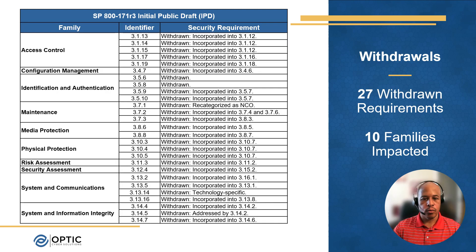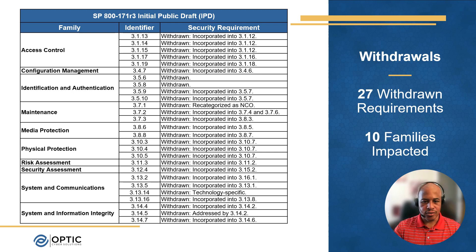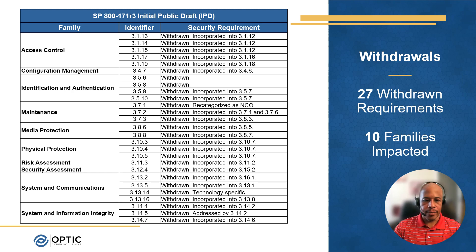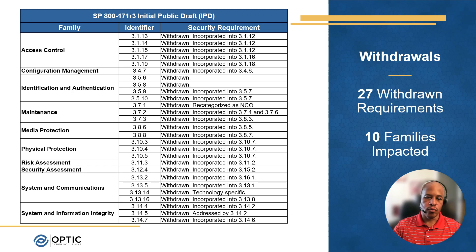On this slide we have the withdrawals — there are 27 total withdrawals across 10 control families. Most of these requirements that have been withdrawn have actually been incorporated into related controls. For identification and authentication, requirements 3.5.6 and 3.5.8 have been withdrawn. For maintenance, requirement 3.7.1 has been withdrawn and recategorized as NCO, meaning it doesn't impact confidentiality and was removed for that reason. So although requirements have been withdrawn formally, they still remain — they've just been reorganized in the new baseline.